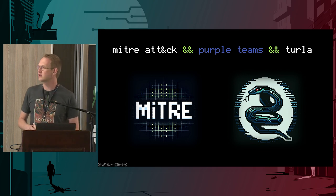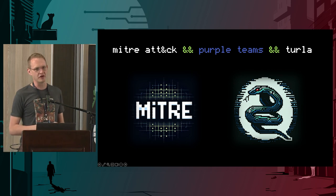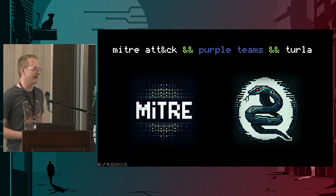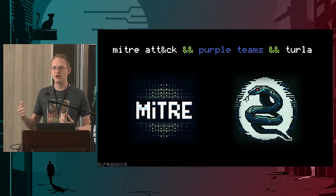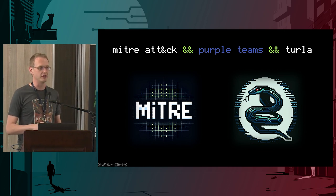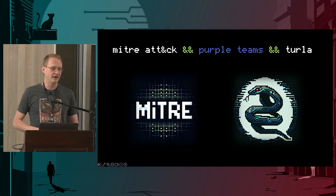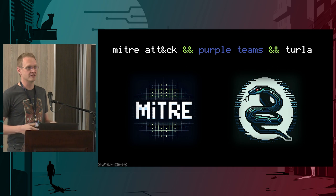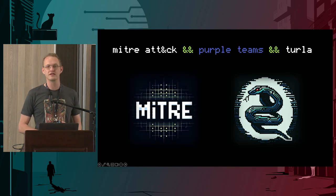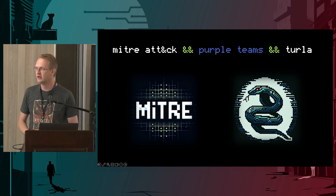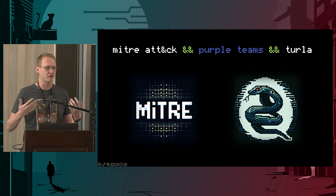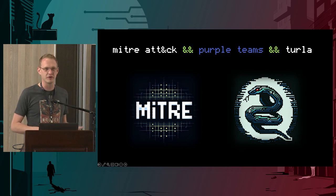One of the things MITRE does is a yearly ATT&CK evaluation. Simply put, they go to vendors and say, we want to be a bad guy — do you want to install your tooling on our play environments and see how well you can detect these bad guys? They are known bad guys. We know how they work because MITRE asks the threat intelligence community beforehand. What you see coming out of this are vendor tweets claiming 100% coverage, but in reality it's a buyer's guide. If you're in the market for a security product, you can go to the ATT&CK evaluation results website and look at the dashboards of what detection actually looked like.